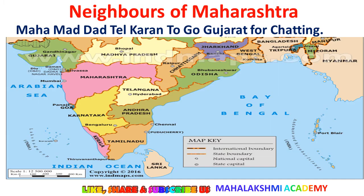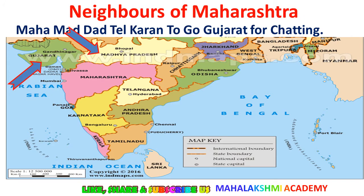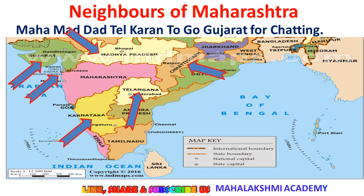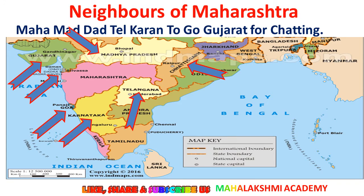Now let's move to the map to see which regions are touching Maharashtra. The first one is Gujarat, then we have Madhya Pradesh, Chhattisgarh, Telangana, Karnataka, Dadar and Nagar Haveli (which is a union territory), Goa, and the Arabian Sea, which forms the coastal boundary of Maharashtra.